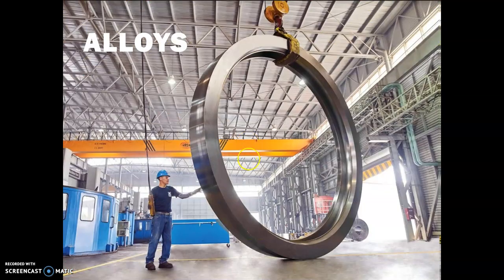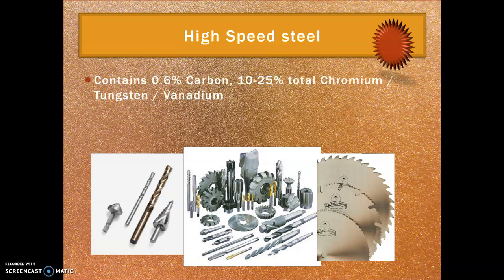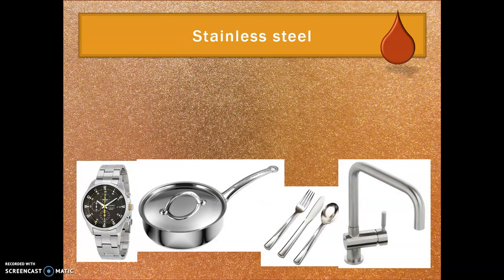On to our alloys. The first ferrous alloy is high speed steel — very much the big brother of tool steel. It has a small percentage of carbon but contains 10 to 25 percent chromium, tungsten, and vanadium. Tungsten in particular is an incredibly strong metal. Anything you'd expect to take high temperatures from friction and cutting — drill bits, saw blades — would be expected to be high speed steel.